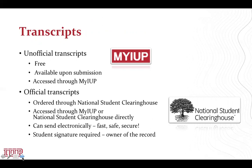Transcripts are also offered through our office and are a complete listing of courses and grades that a student takes at IUP. A transcript also contains transfer credits. Transcripts are often requested by employers, scholarship applications, and other universities when academic standing or grade point average is being requested. There are two types of transcript. An unofficial transcript is free, available upon submission, and accessed through MyIUP. An official transcript is ordered through the National Student Clearinghouse, which you can access through your MyIUP account or directly.